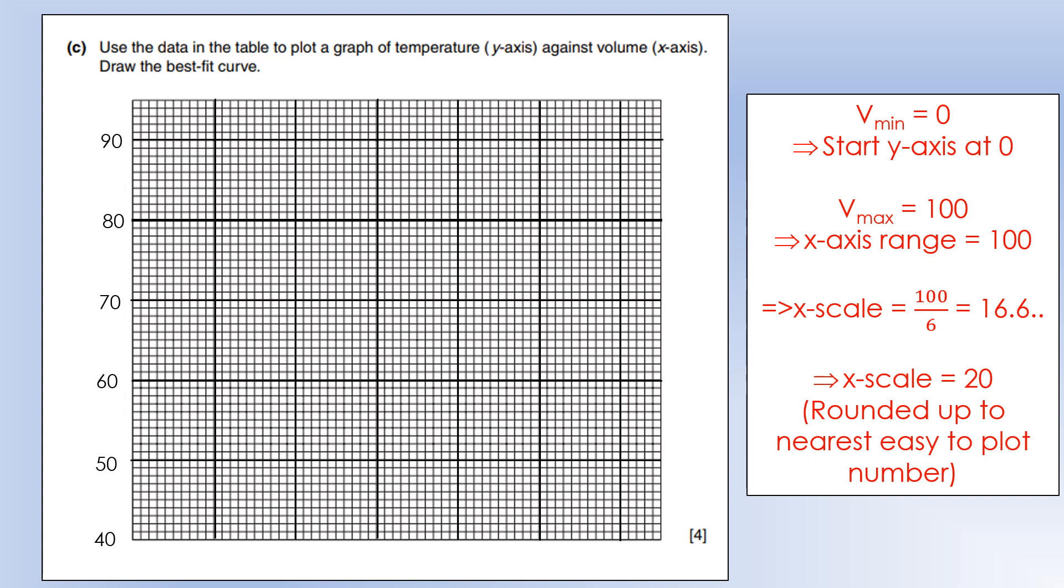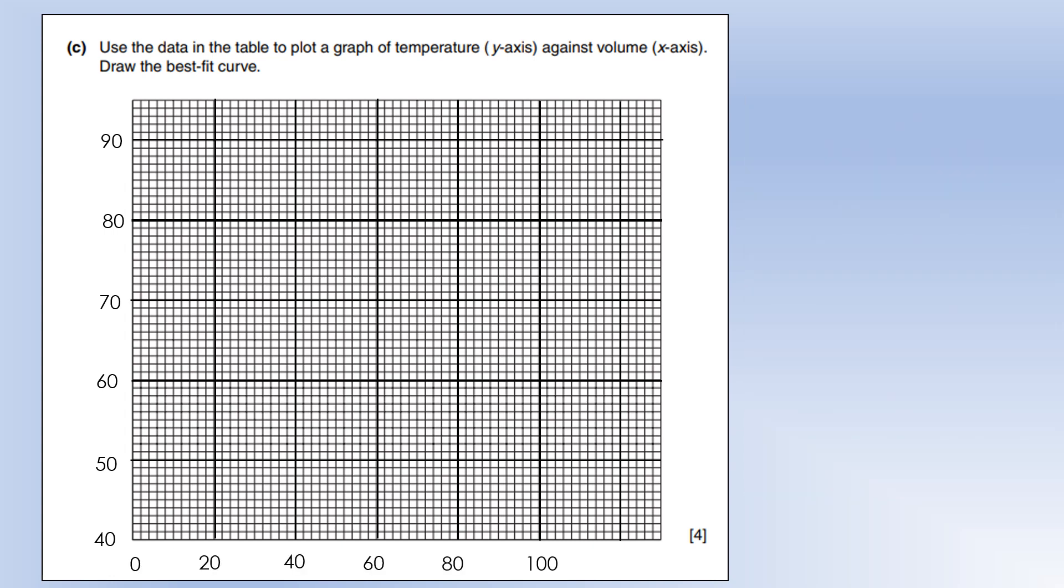Then the x-scale - our volume was initially 0 and goes up to 100, so we need to go up in 20s. We have our scale and can label our axes with units. We can then plot all of our points and draw a smooth curve of best fit. You will lose marks for your curve of best fit if it's wobbly. If you see the line wobbling all over the place or any sudden changes in direction, that will cost you your best fit line mark.